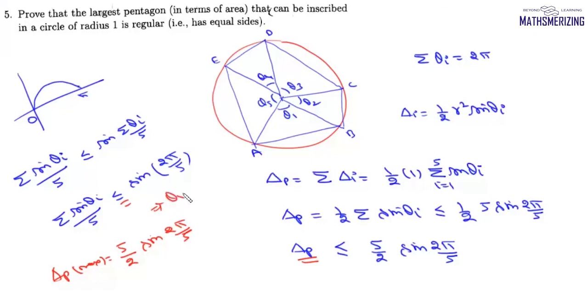And we know that these two expressions they'll be equal if and only if theta one, theta two and theta five they must be equal. So that means this area will be maximum only when all the angles are same which makes it a regular pentagon and this is how we solve these questions.